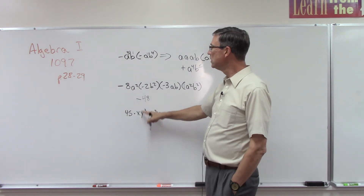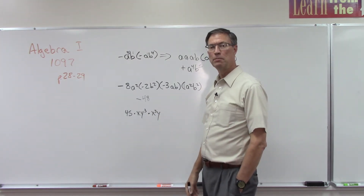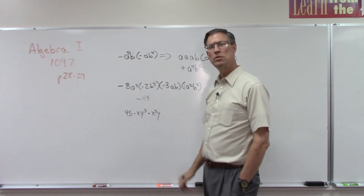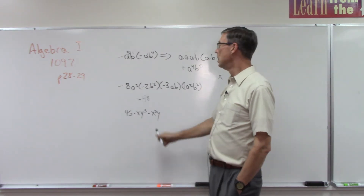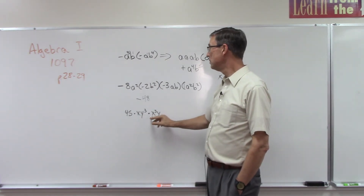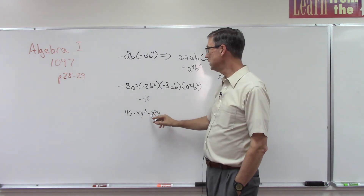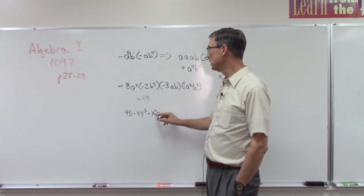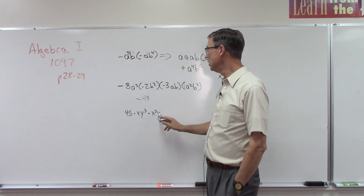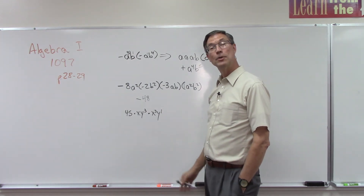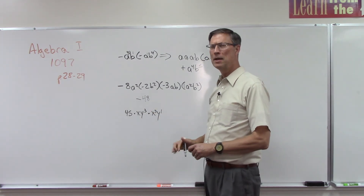This last one uses big dots instead of parentheses to indicate multiplication. In algebra we don't use the × symbol anymore because x is used as a variable, but dots mean the same thing. 45 times 1 times 1 — you already know the coefficient. They're all positive so the answer is positive. We have one x here and three x's here, so the variable becomes x to the fourth. Then y to the third and y to the one — add the exponents to get y to the fourth.